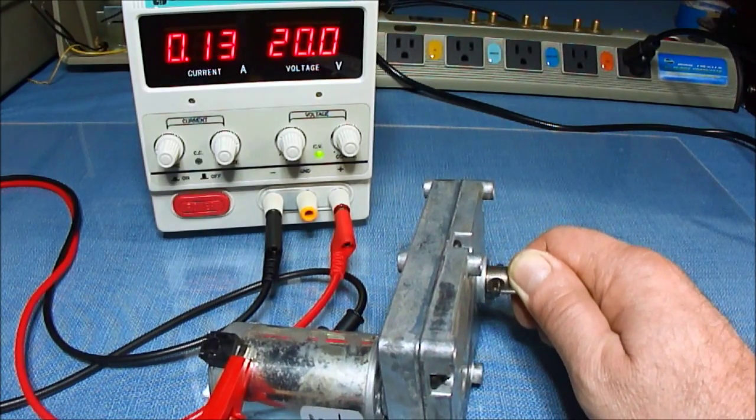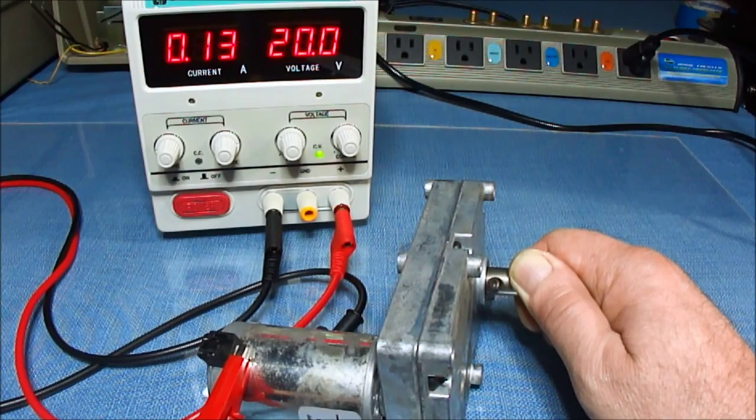So the voltage is the speed and the current is the torque.